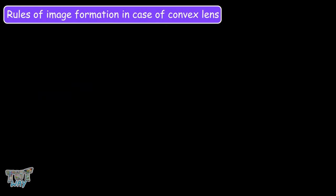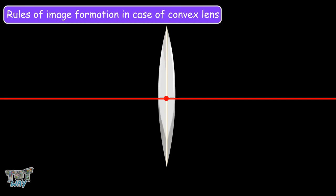Here we have a convex lens where the optical center is marked as O.